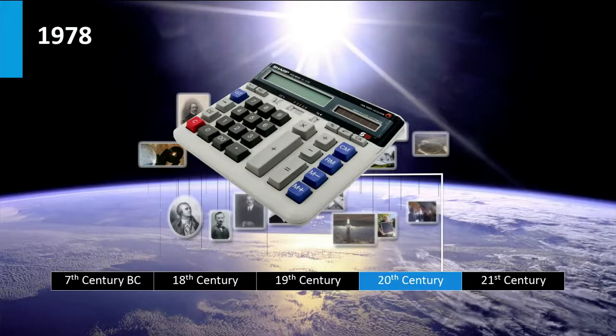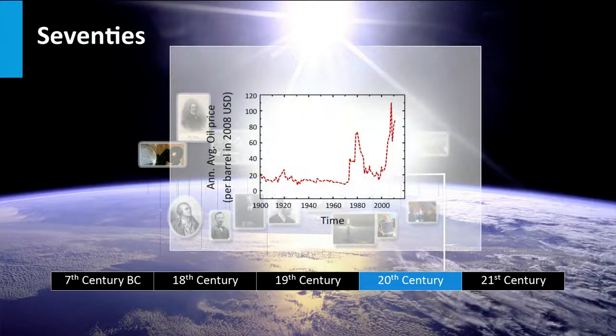In the 70s, due to the oil crisis and increasing oil prices, the public interest in photovoltaic technology for terrestrial applications increased. PV technology was no longer only a niche technology for space applications. In the late 70s and 80s many companies started to develop PV modules and systems for terrestrial applications.